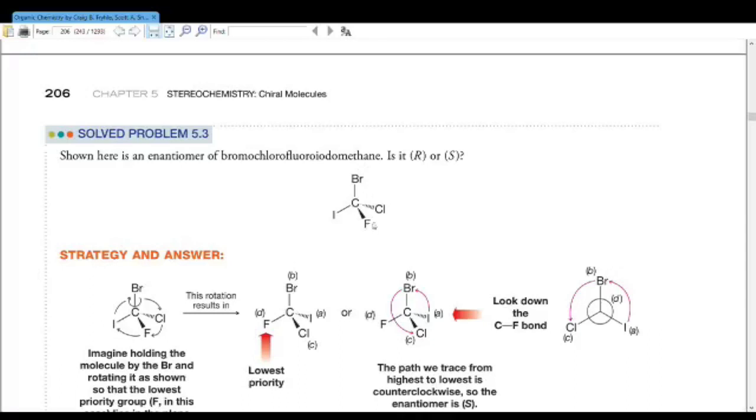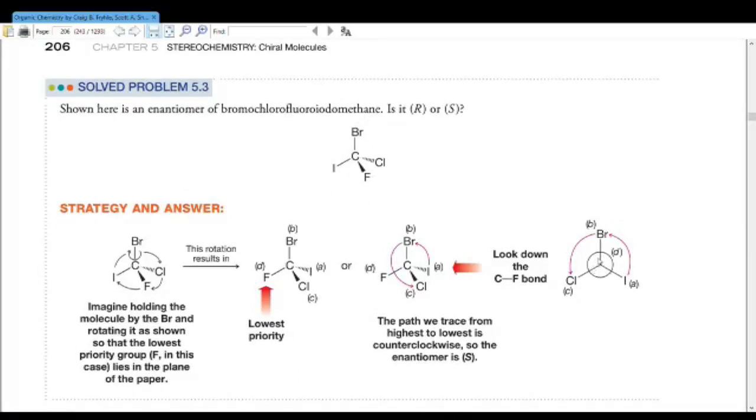So we rotate the molecule so that fluorine is pointed away from us, and then we go from A to B to C. Everybody see that? So that would make this S-bromo-chloro-fluoro-iodo-methane. Very simple, once you get used to it.